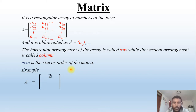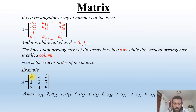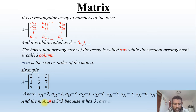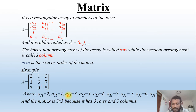For example, let matrix A be given as A = [2, 1, 3; 1, 6, 0; 3, 7, 5]. So a₁₁ = 2, a₁₂ = 1, a₁₃ = 3, a₂₂ = 6, a₃₂ = 0, and so on. The matrix is 3×3 because it has 3 rows and 3 columns, so the order is 3×3.